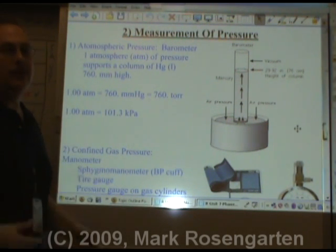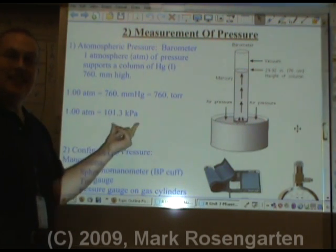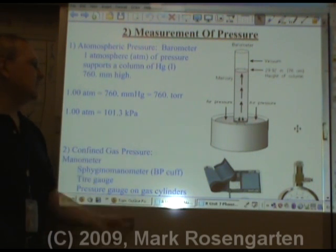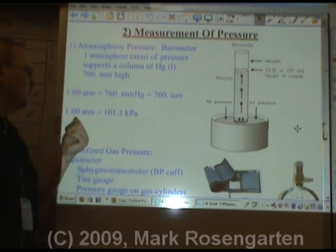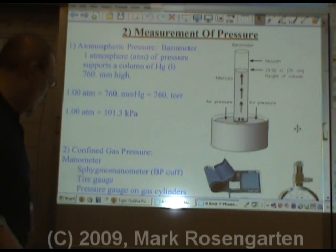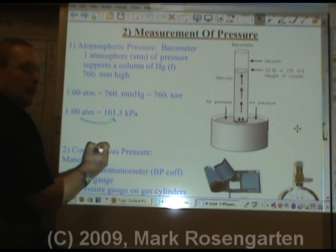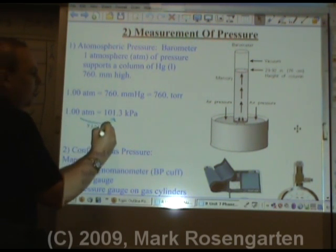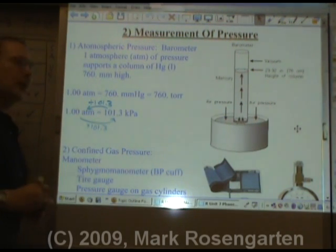The atmosphere is a standard unit of pressure. We're going to be using atmospheres and kilopascals in this class. 101.3 kilopascals equals 1.00 atmosphere — kilopascals is a metric unit of pressure. To convert from atmospheres to kilopascals, multiply by 101.3; to go from kilopascals to atmospheres, divide by 101.3.